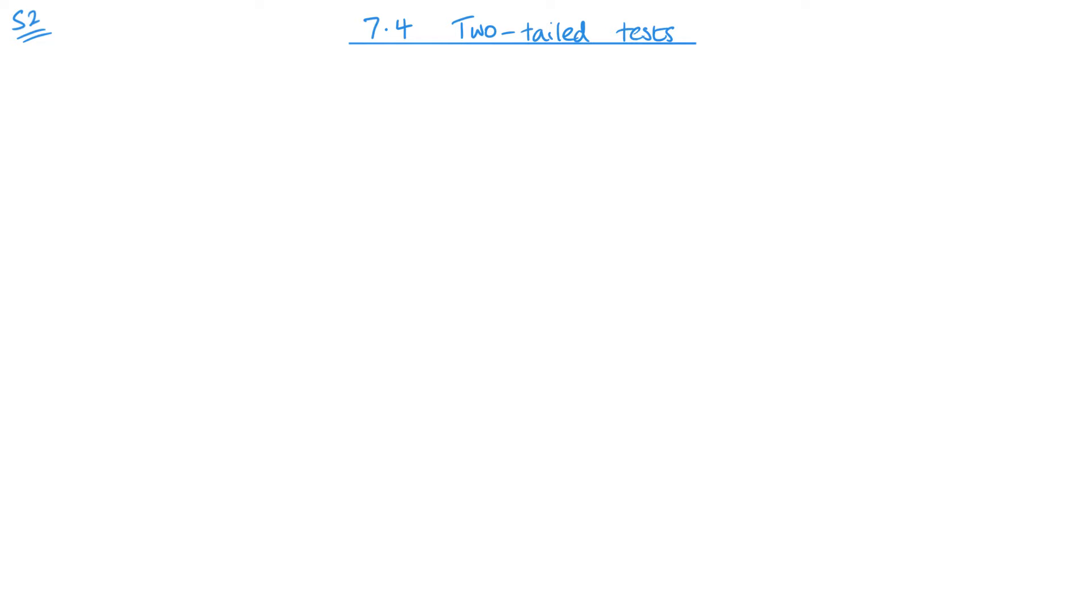Number one and the most important one is that for a two-tailed test you need to halve the significance level. So if it was a 10% significance level, you'd halve it and it's 5% per tail. If it was 5% significance level, you'd halve it and then it would be 2.5% significance level for each tail. That's the first thing you need to be careful about.